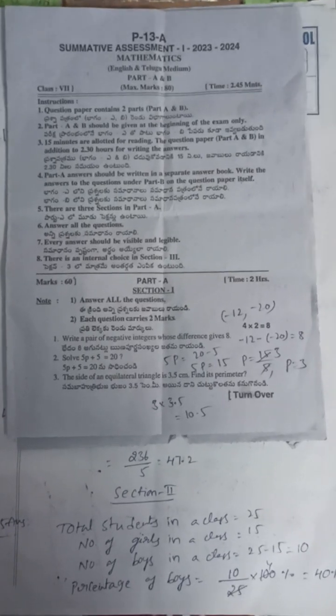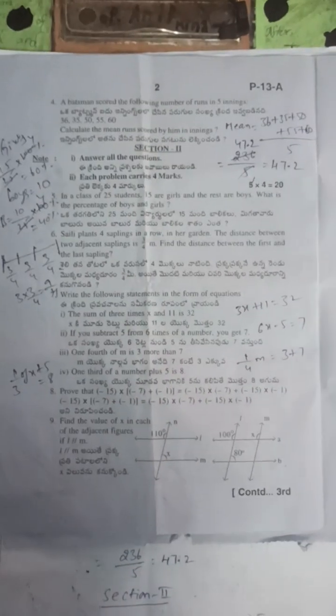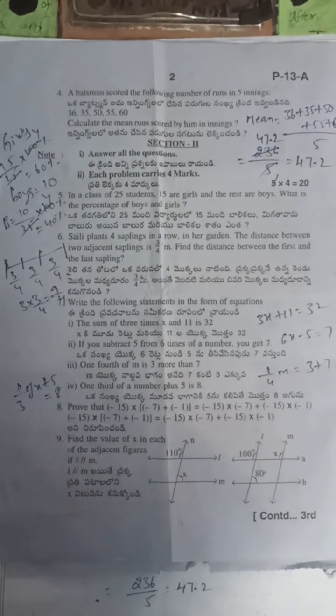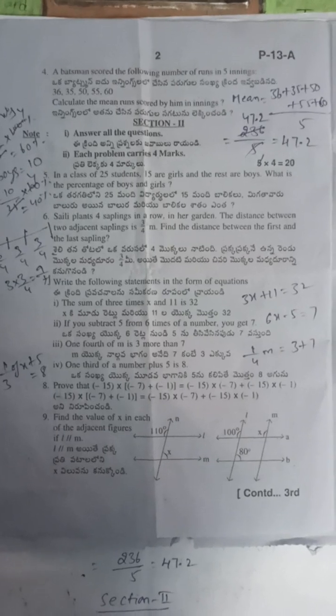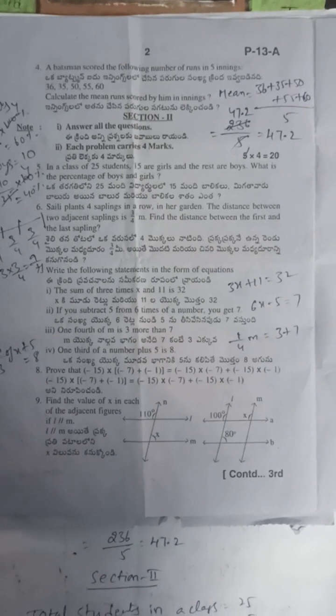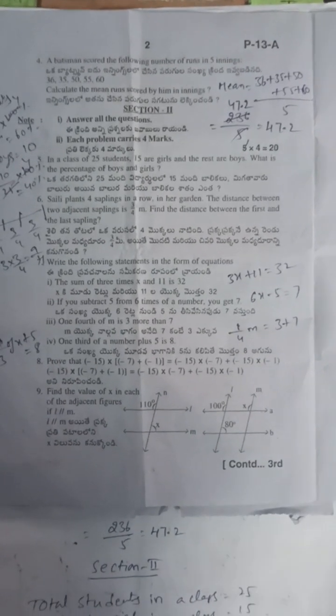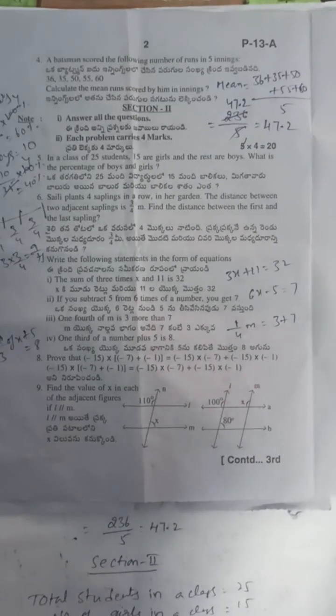Next, mean: A batman scored the following number of runs in five innings. Find their mean. So mean is sum of observations divided by number of observations. The observations, when we add them, we get 236. How many are there? 5. That is 236 by 5, which equals 47.2.